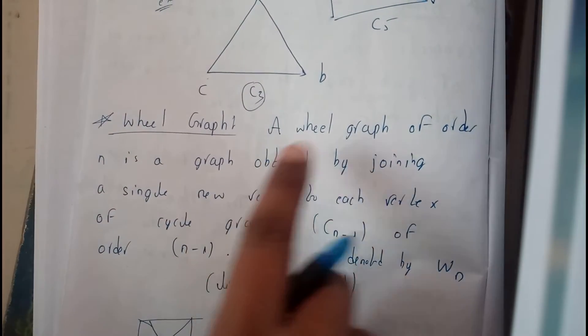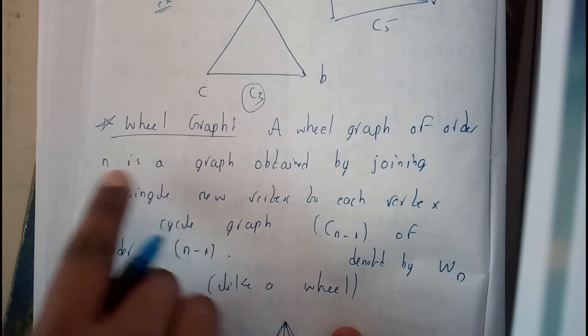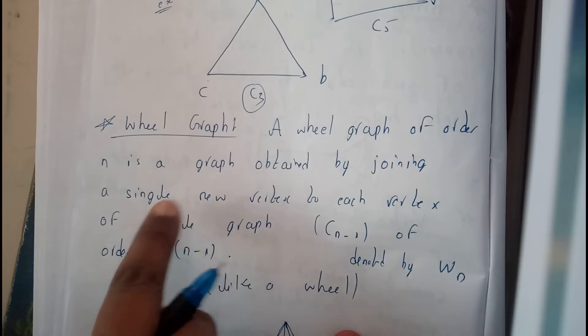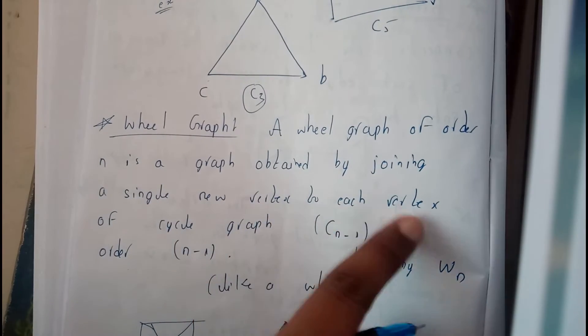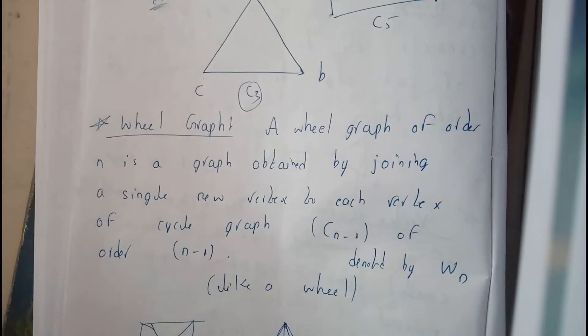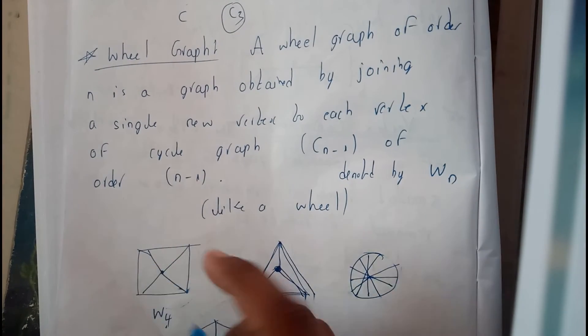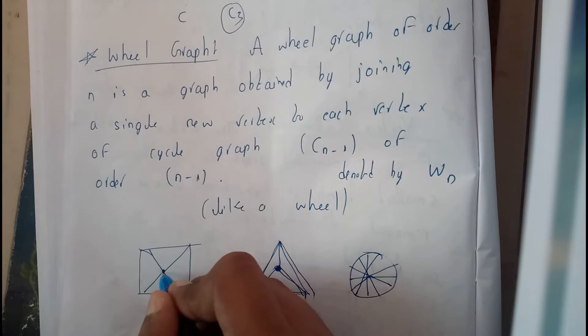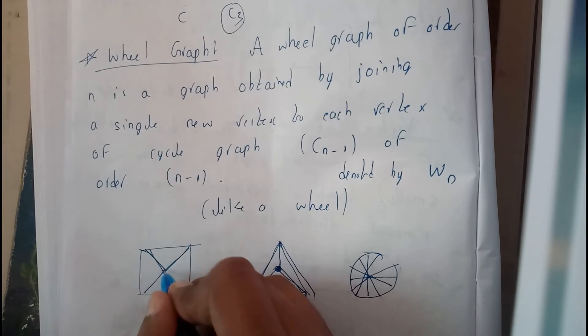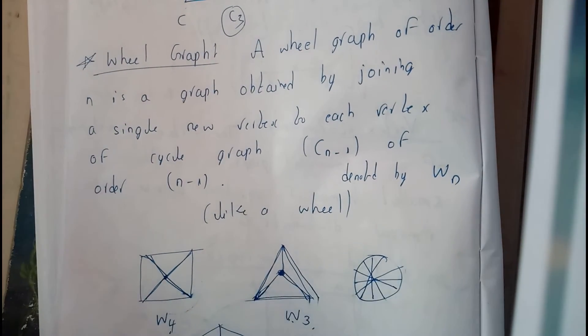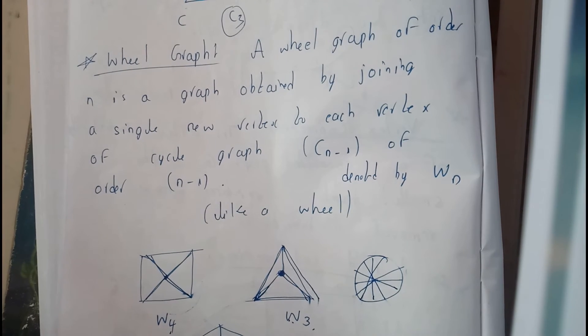In terms of definition, a wheel graph of order n is a graph obtained by joining a single new vertex to each vertex of a cycle. So this is a simple graph in which I gave a new vertex at the center and have joined all the possible vertices from that point, so that leads to a wheel graph. Thanks for watching.